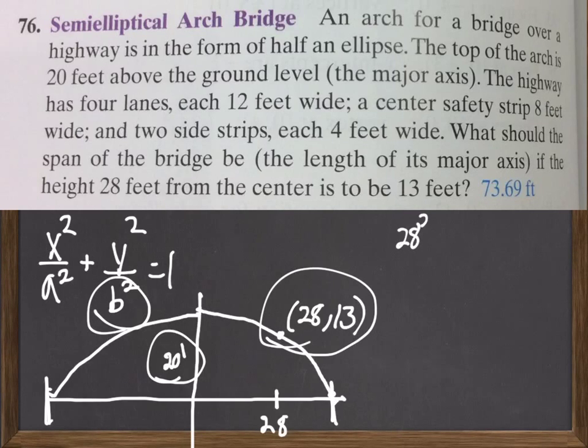28 squared over a squared. That's the x value. Over a squared, we don't know. Plus 13 squared over b squared, which was given to us. And then, it's just a matter of solving the problem.